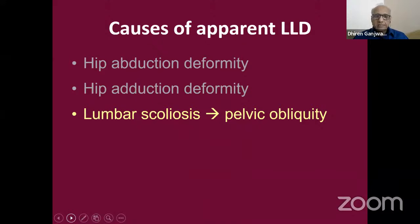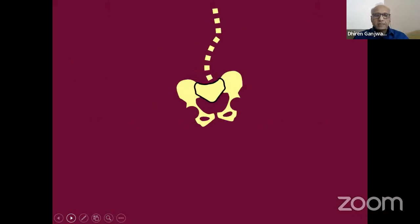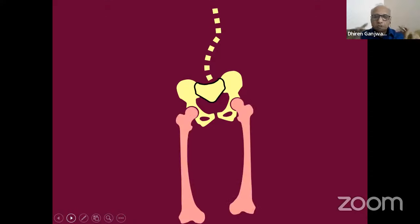The third cause is a problem in the lumbar spine. There is a scoliosis at the lumbar level that results in pelvic obliquity. Not all scoliosis will cause pelvic obliquity, but those in the lower lumbar area will. This leads to limb length discrepancy of the apparent variety. Both lower limbs are of equal length, but because the pelvis is tilted, that again leads to apparent limb length discrepancy. That's the third cause.